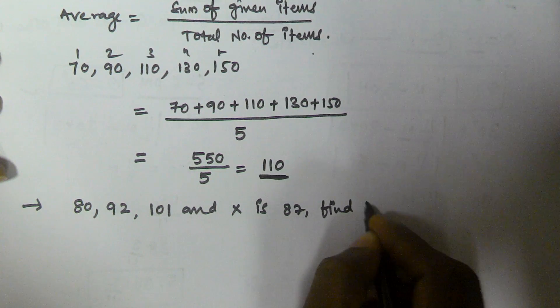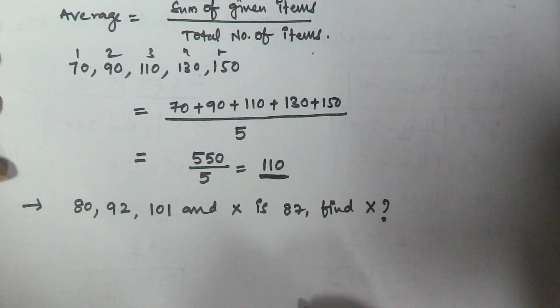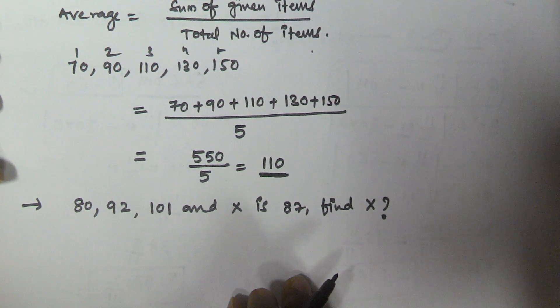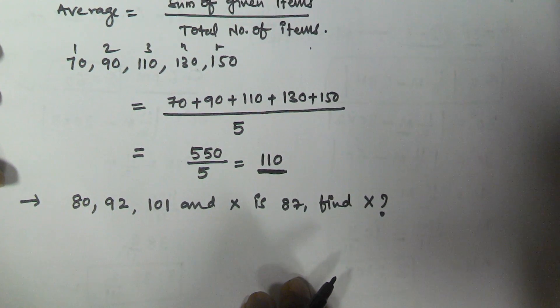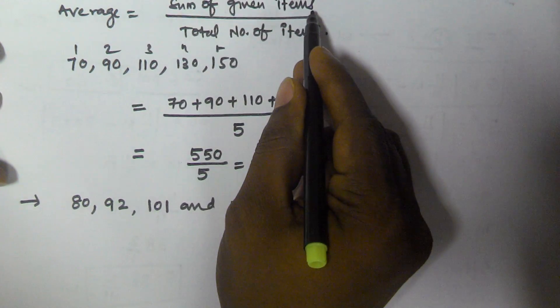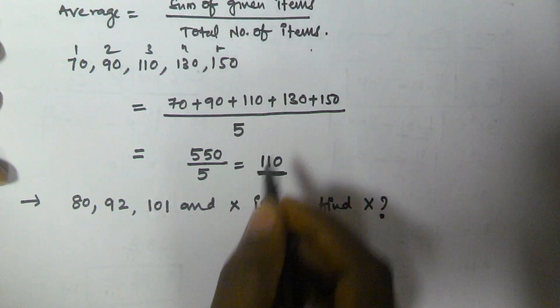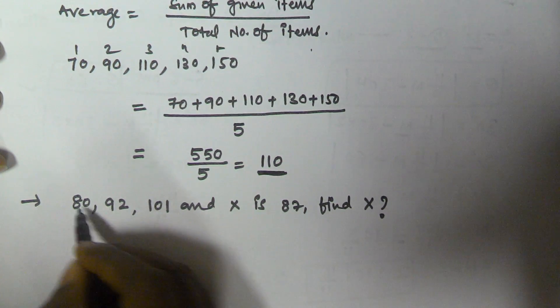According to the definition of average, sum of the given items divided by total number of items. We have how many items? One, two, three, four items.